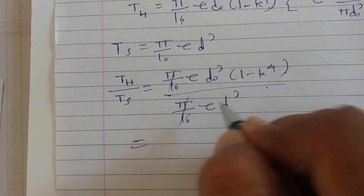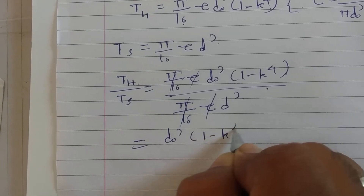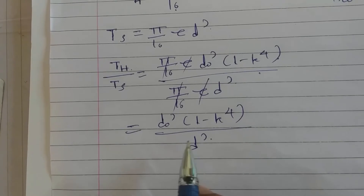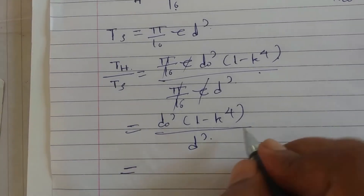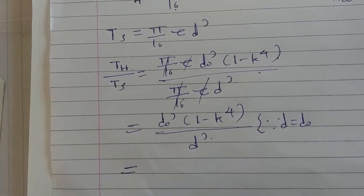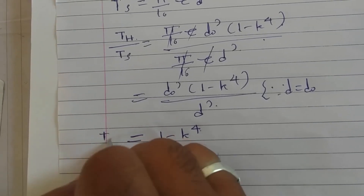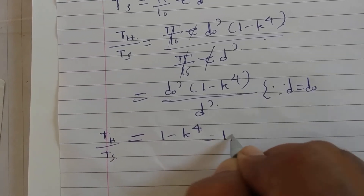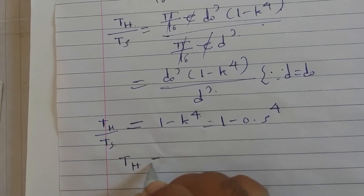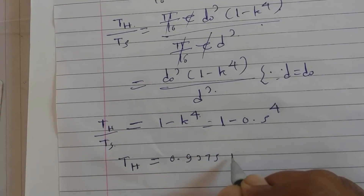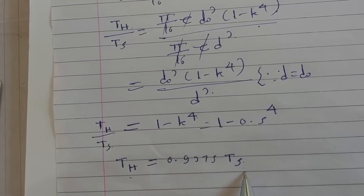After cancellation of π/16 and τ, we get D₀³ × (1 − k⁴) / D³. Since D = D₀, this simplifies to 1 − k⁴ = 1 − (0.5)⁴ = 1 − 0.0625 = 0.9375. Therefore, the strength of the hollow shaft is 0.9375 times the strength of the solid shaft.